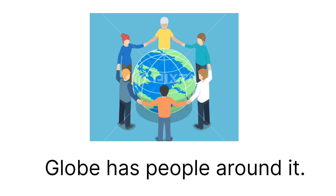For example, globe has people around it. In picture aap dekhoge, ek prithvi hai, jahan par woh globe hai, uske aspas log khade hai. Globe has people around it. Hamara focus uske aspas ke area par hai, na ki globe par hai.